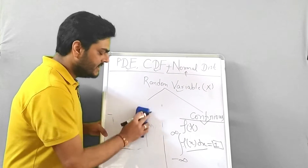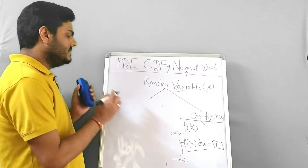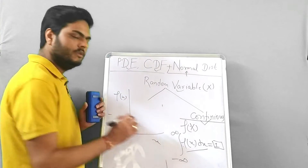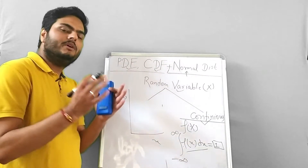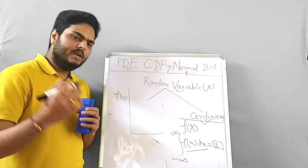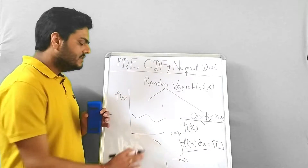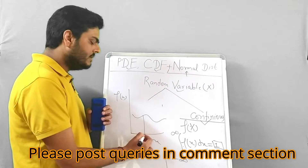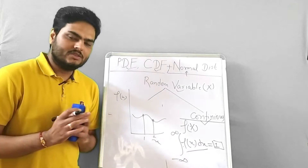So f(x) can be any chart or any curve. For example, if I draw a curve — let's say this is my f(x) and this is my x-axis — in a continuous random variable, x can take any continuous value. So all these values will be allowed. If the random variable is 1, then f(x) gives one value; if the random variable is 2, then f(x) gives another value, and so on.